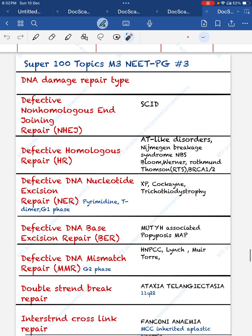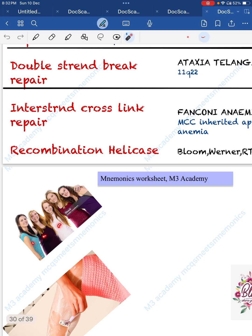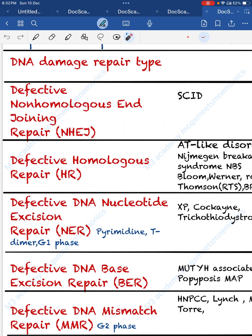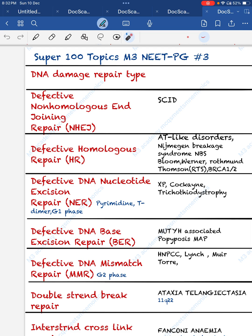First, the DNA repair defects. Defective non-homologous end-joining repair leads to severe combined immunodeficiency (SCID). The mnemonic: when you combine many people in a single frame, they look non-homologous — so 'combined' links to non-homologous end-joining, giving us SCID.